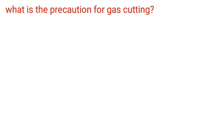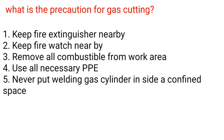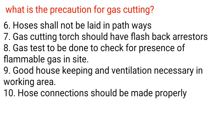What are the precautions for gas cutting? 1. Keep a fire extinguisher nearby. 2. Keep a fire watch nearby. 3. Remove all combustibles from the work area. 4. Use all necessary PPE. 5. Never put welding gas cylinders inside a confined space. 6. Hoses shall not be laid in pathways. 7. Gas cutting torches should have flashback arresters. 8. Gas test to be done to check for the presence of flammable gas. 9. Good housekeeping and ventilation are necessary in the working area. 10. Hose connections should be made properly.